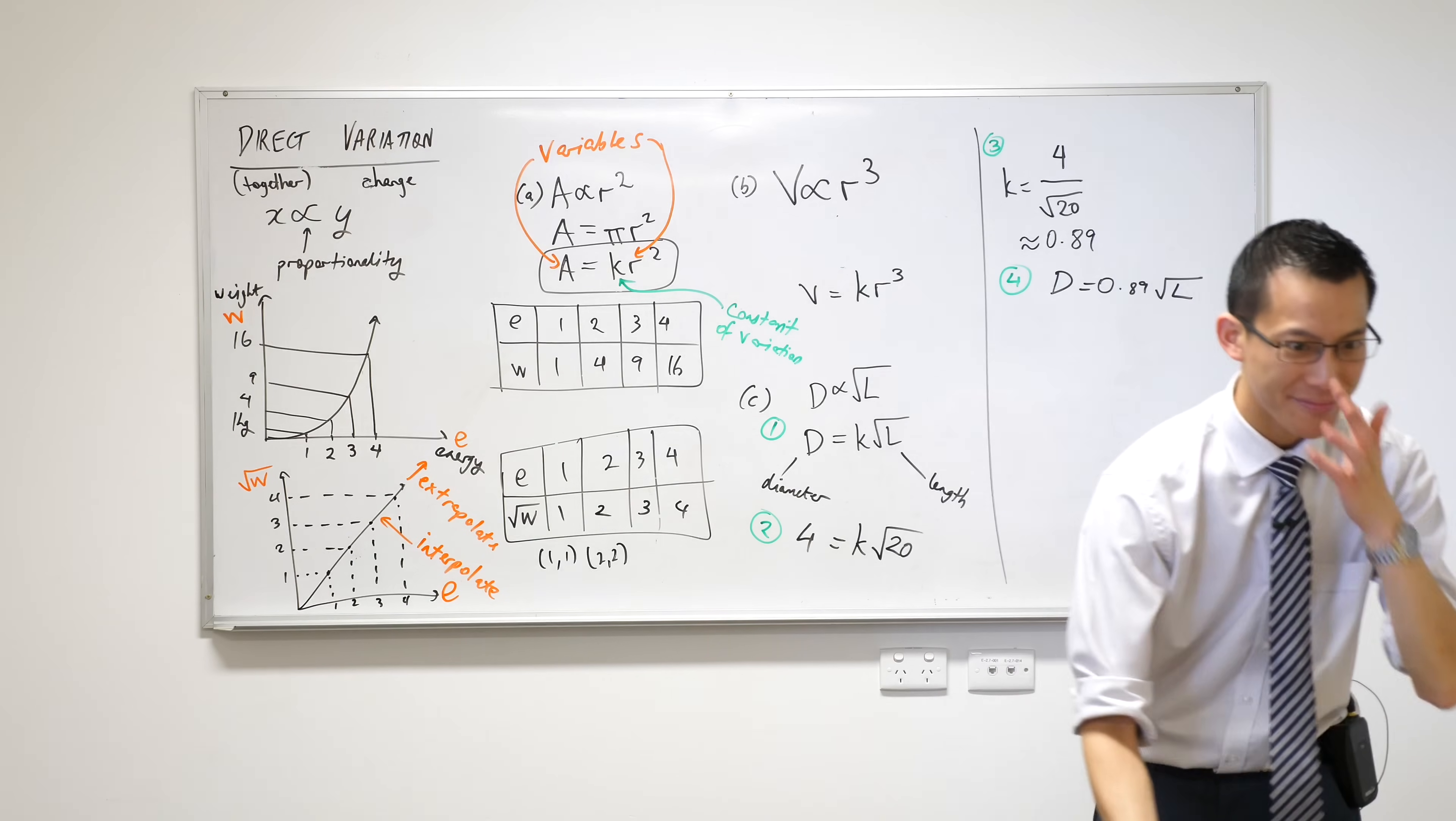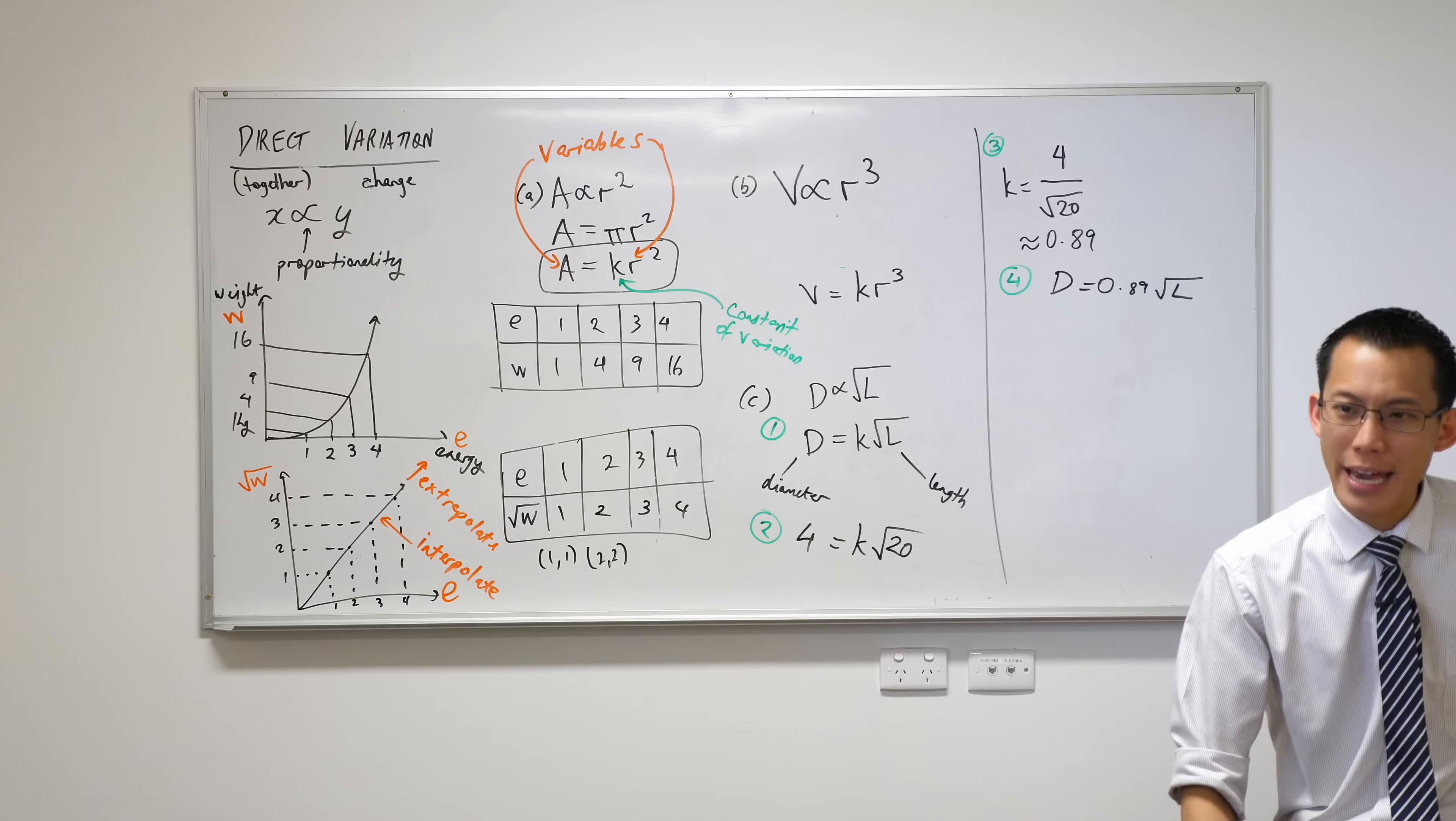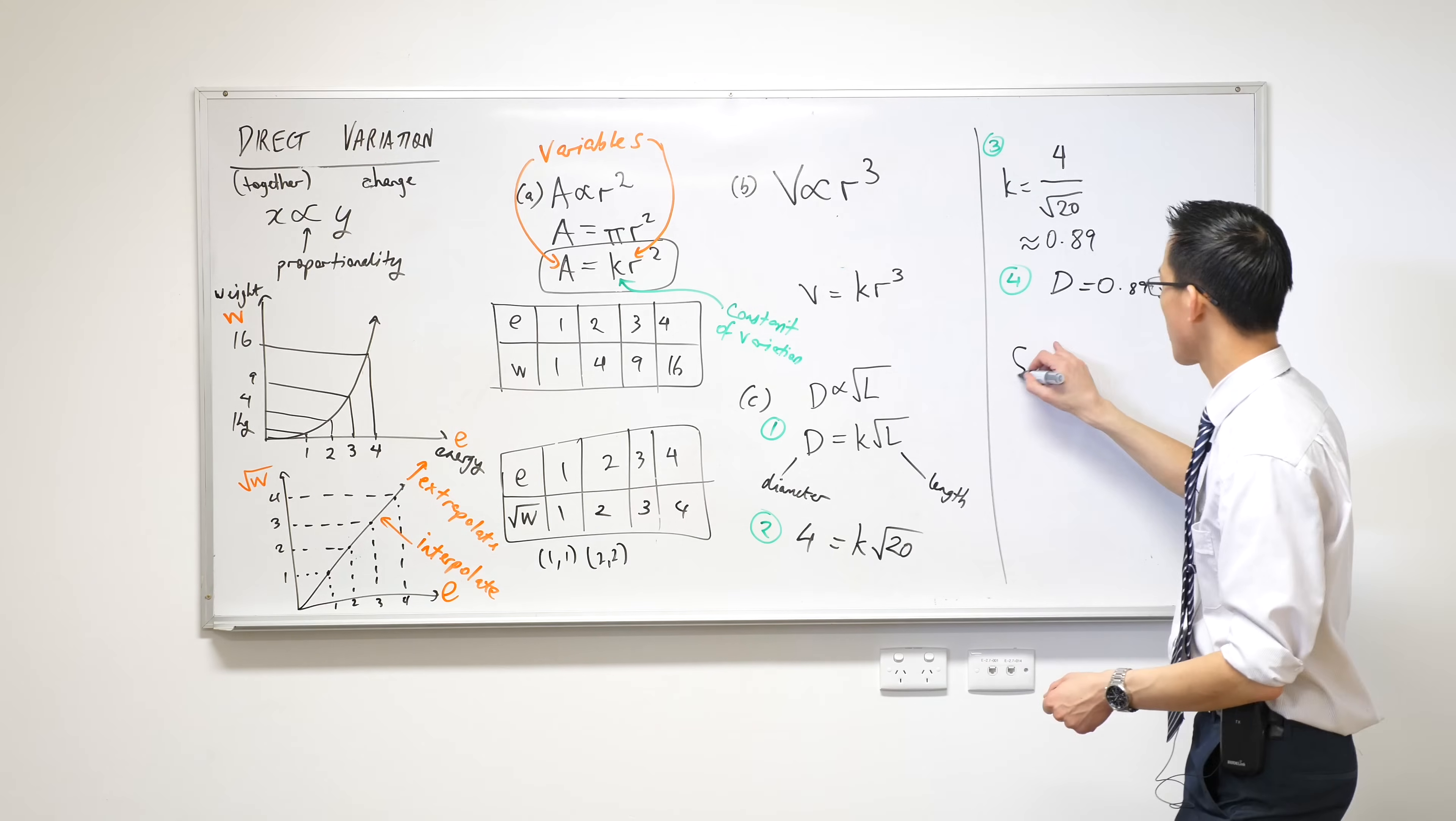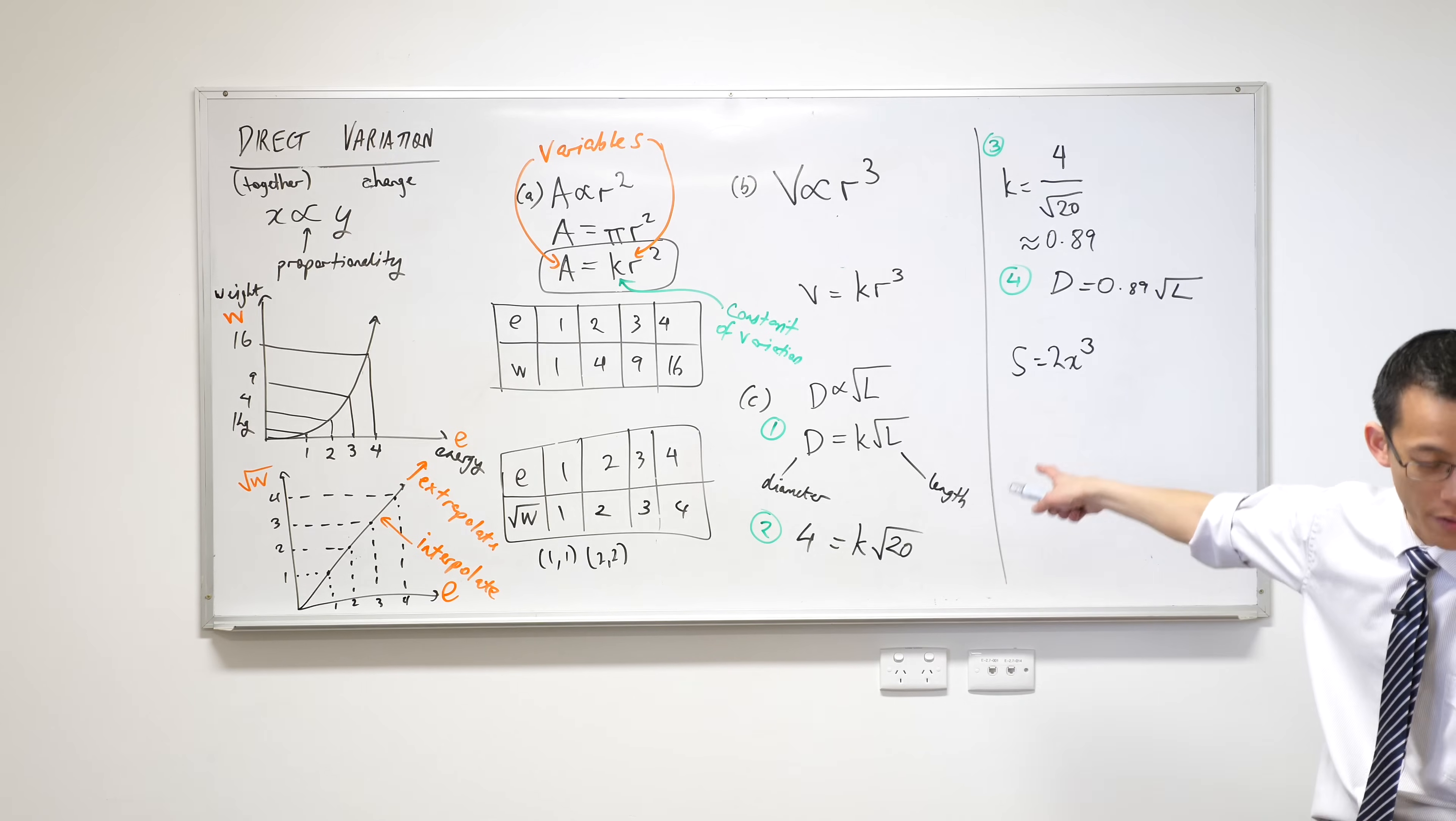In question one, you see how they've got sentences and then we created an equation, right? So they're asking us to go in reverse order. If you got given this, what sentence could you craft? It's going to sound like the sentences in question one that would be equivalent to that.